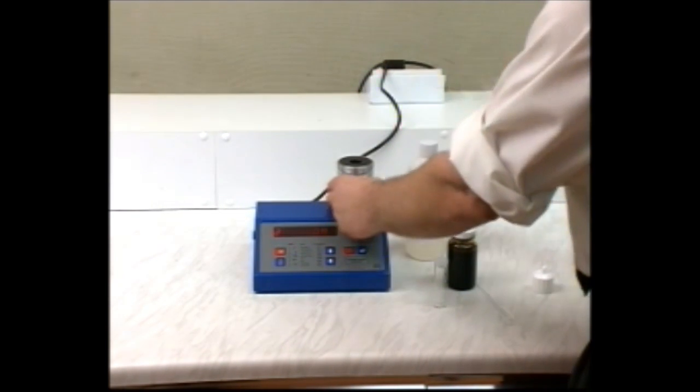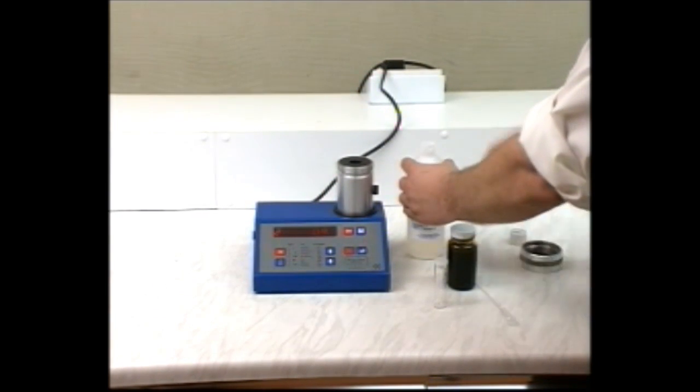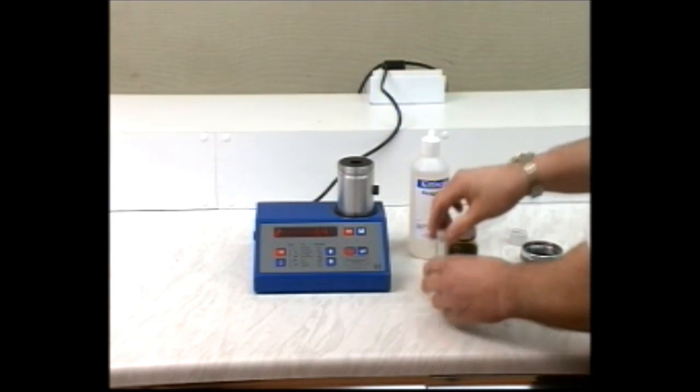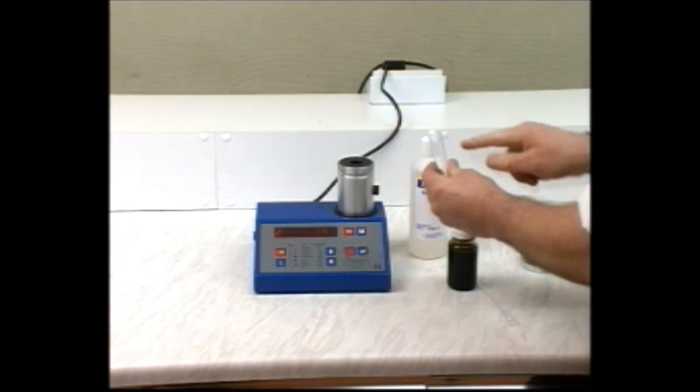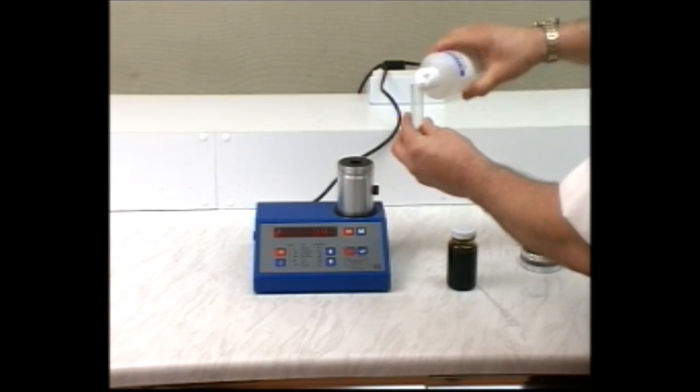Place the cell on the unit. Fill the insolubles tube to the fill line with reagent J, and place it gently into the cell.